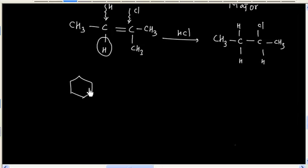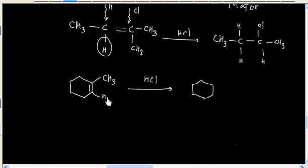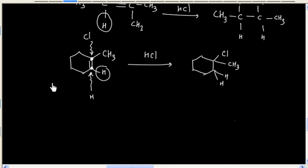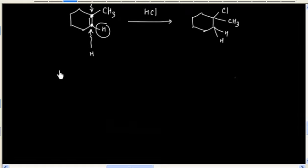Now let us say we have this example. What will be the product? In this case this carbon has one hydrogen and this carbon has no hydrogen. So hydrogen will go to the carbon that already has more number of hydrogens. In summary, Markovnikov's rule says hydrogen goes to the carbon that already has more hydrogens — the richer becomes richer. And this is Markovnikov's rule.